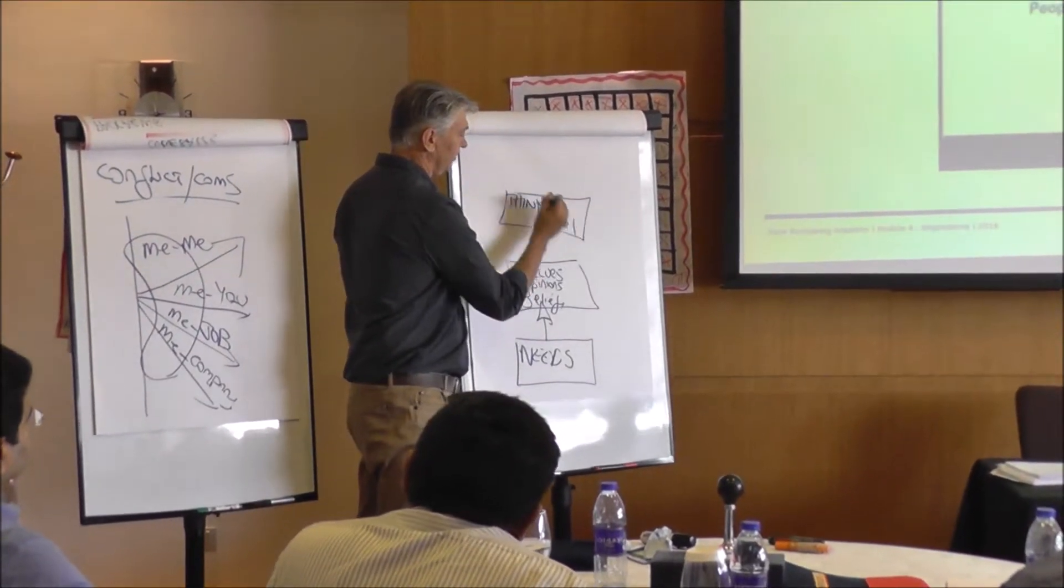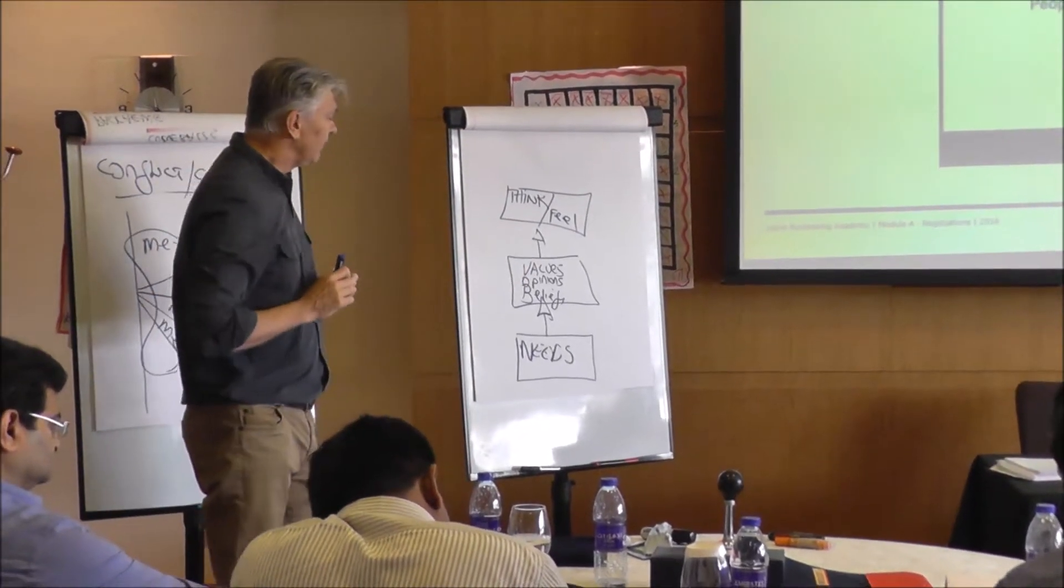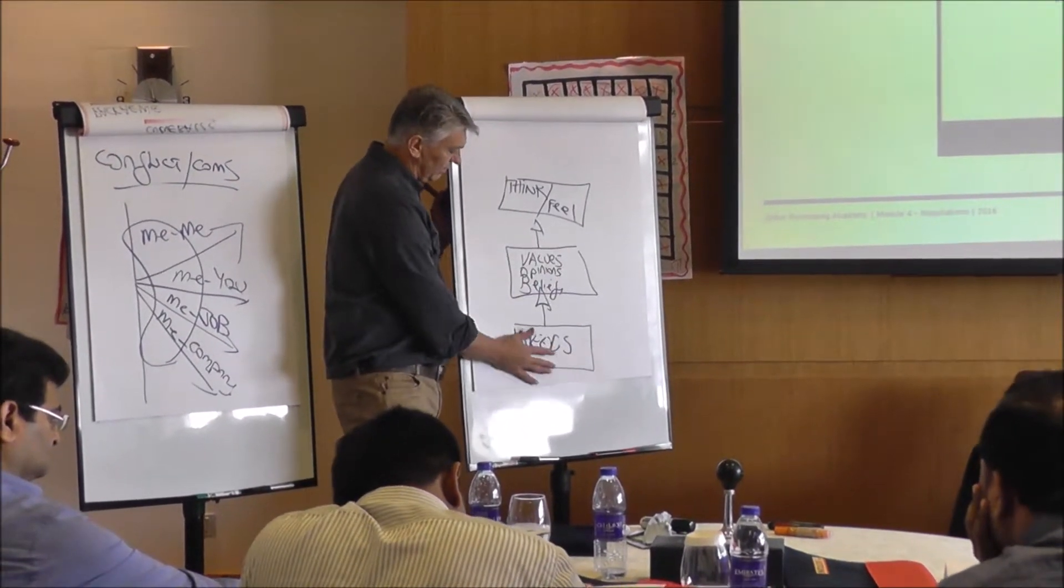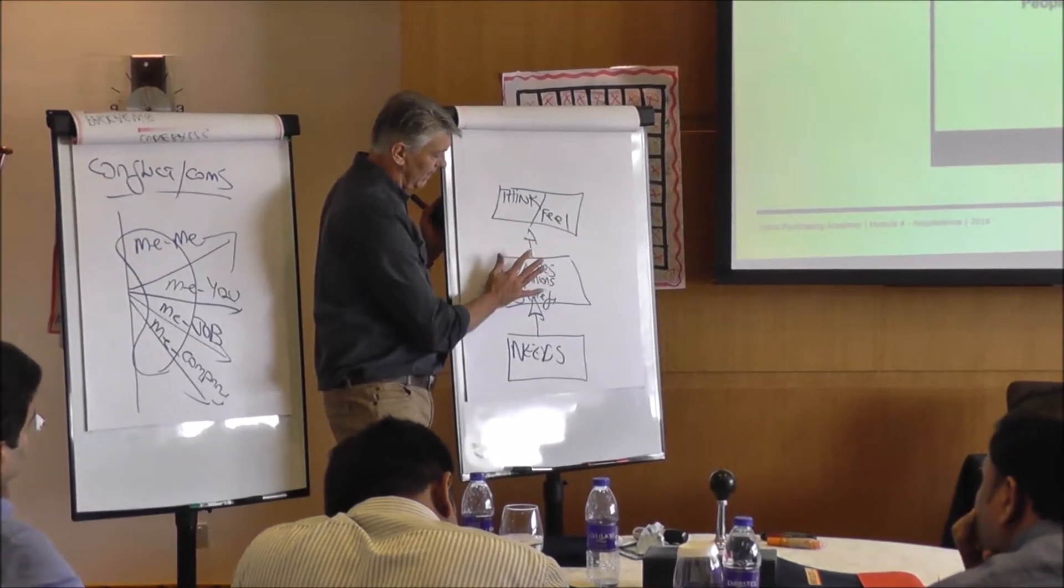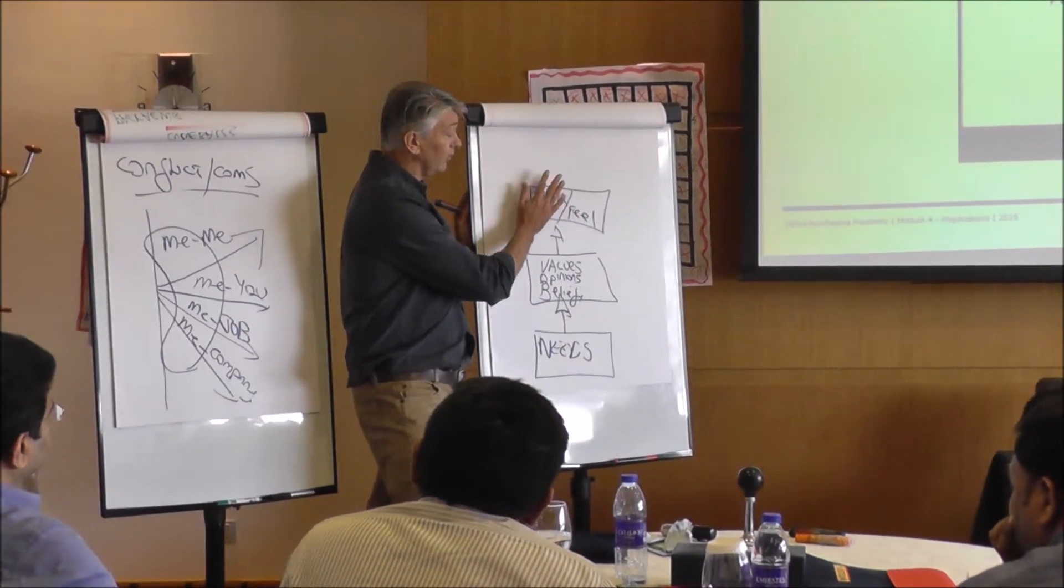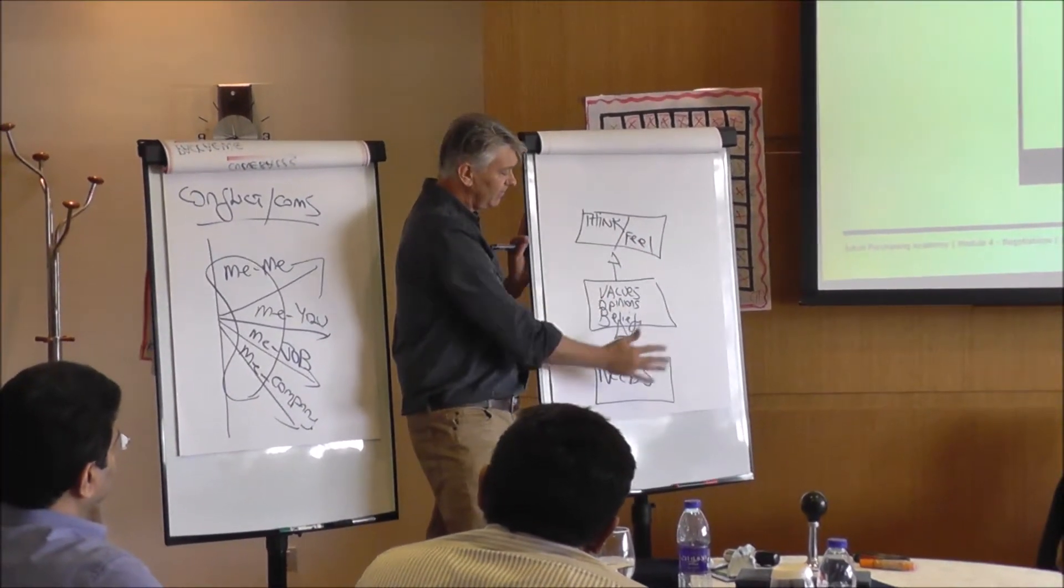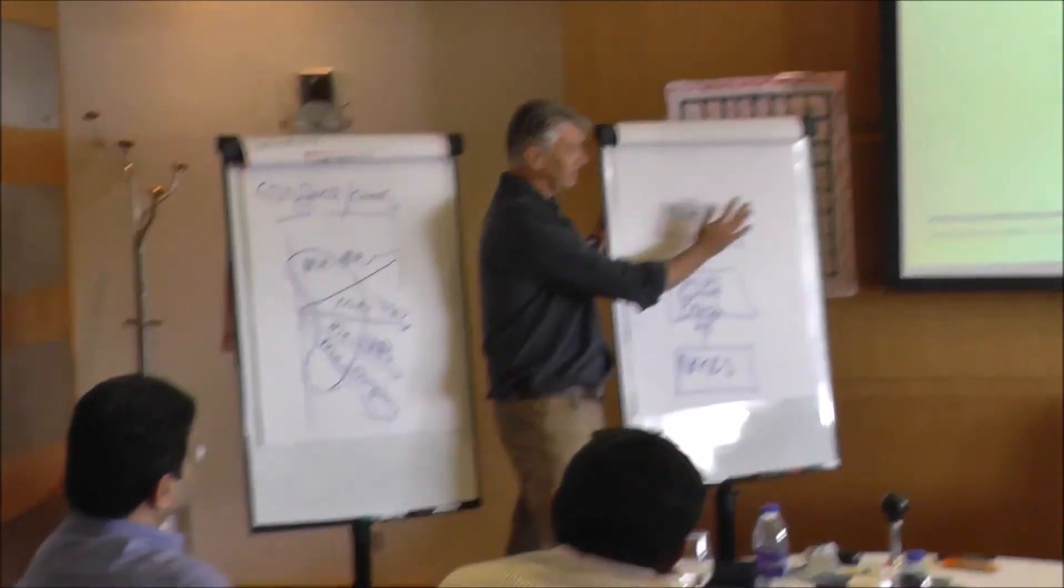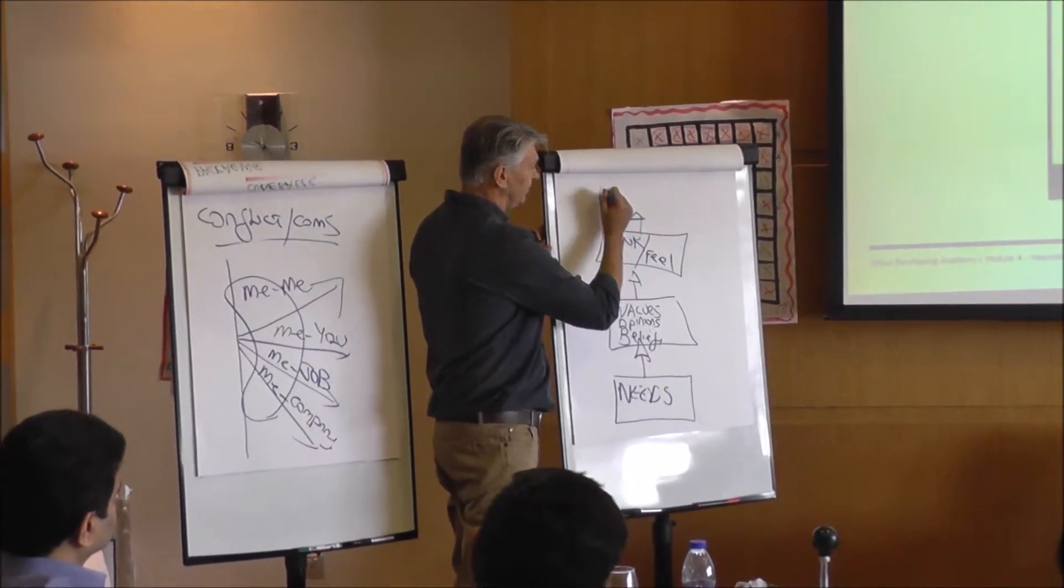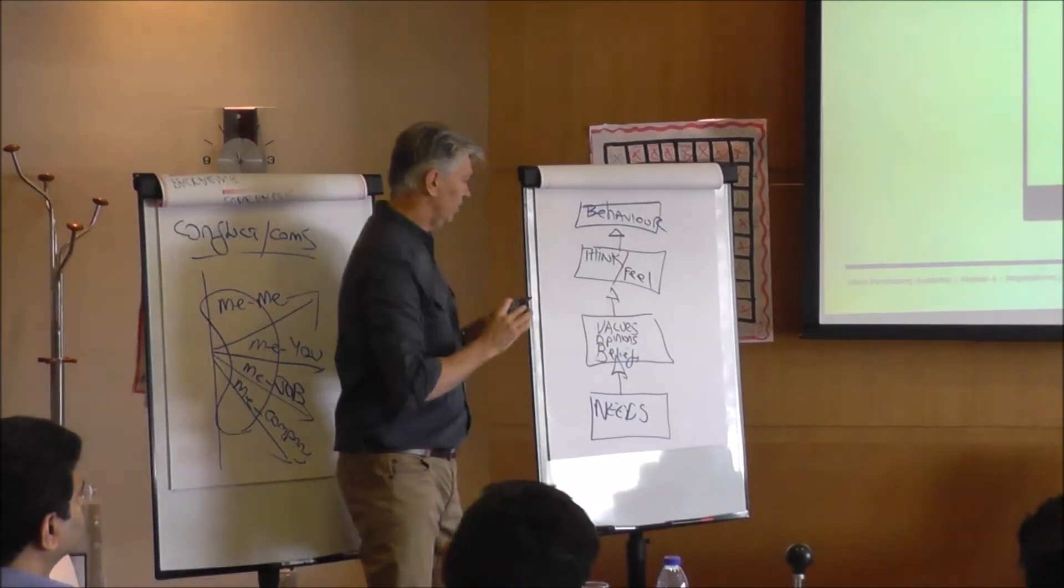This then sets up how people think, but also how they feel. So if somebody believes that they like control, if somebody has a need for control, then they'll have a value or an opinion that they must control the negotiation. If they think that they're losing control, do you think they'll feel happy or sad? Sad, angry, frustrated. But if they feel that they're in control of the negotiation, then they'll actually feel that level of satisfaction. So all of these things actually set up behaviour.